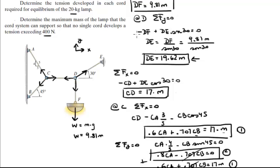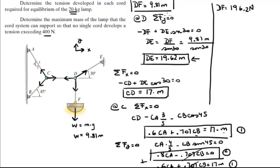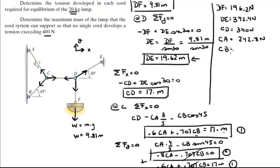For the first problem, the lamp weighs 20 kg. Plugging mass equals 20 kg into each tension: DF equals 9.81 times 20, which is 196.2 N. DE equals 19.62 times 20, which is 392.4 N. CD comes out to 340 N. CA comes out to 242.8 N. And CB comes out to 274.8 N. That's the first problem solved quickly using all this information.